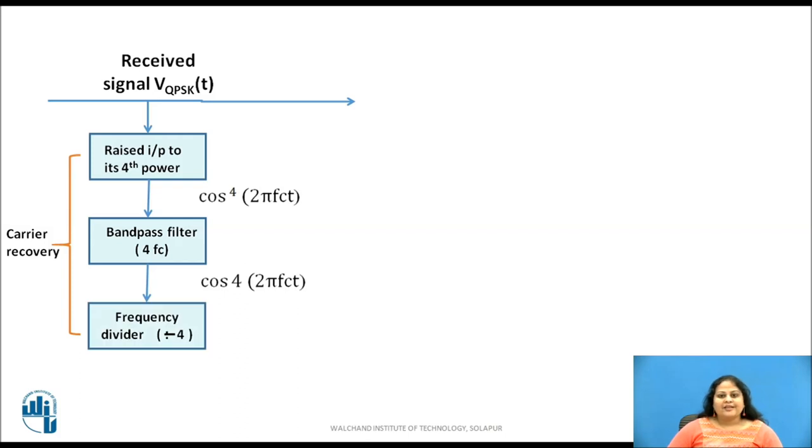Thus giving cos 4, 2 pi fct signal at the output, which in turn is applied to a divide by 4 frequency divider circuit to obtain the coherent carrier signal cos of 2 pi fct. A quadrature carrier sin 2 pi fct is also obtained by phase shifting the carrier by 90 degrees. These two coherent carriers are applied to two synchronous detectors.